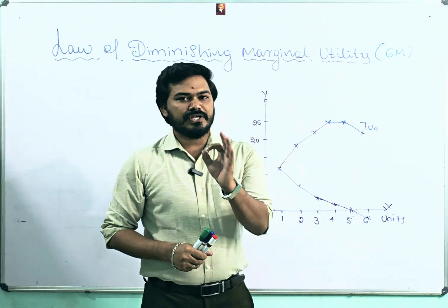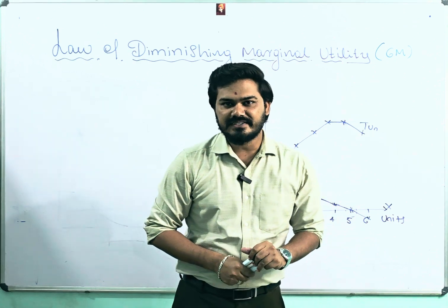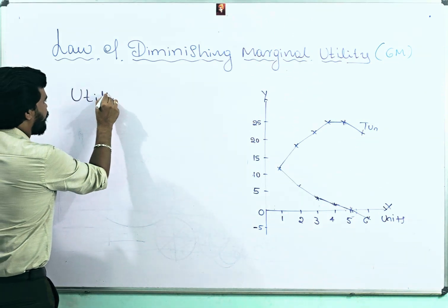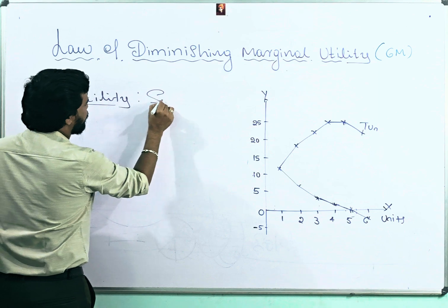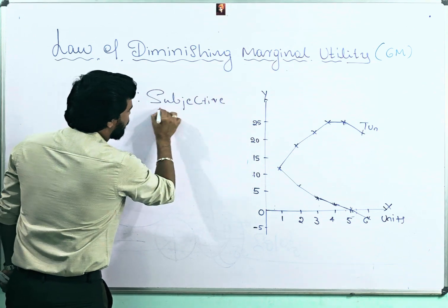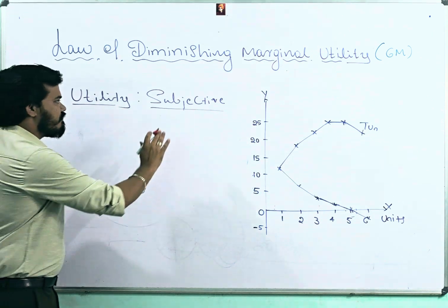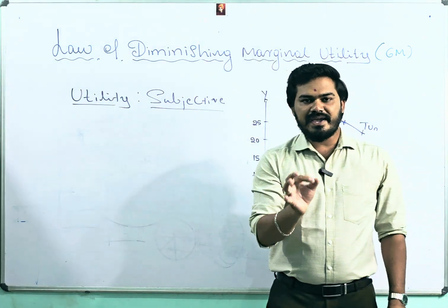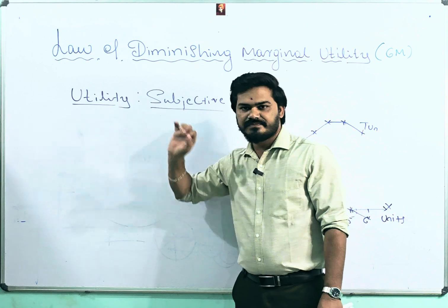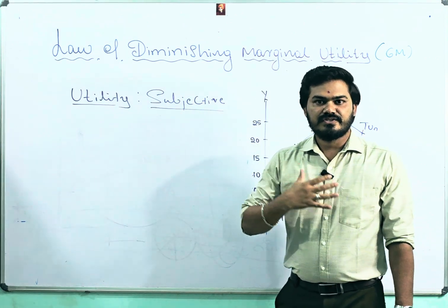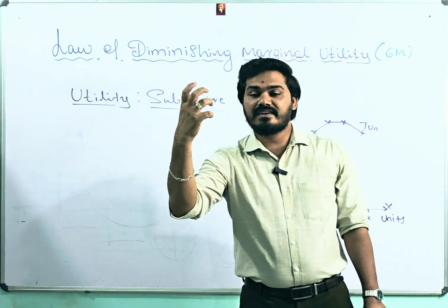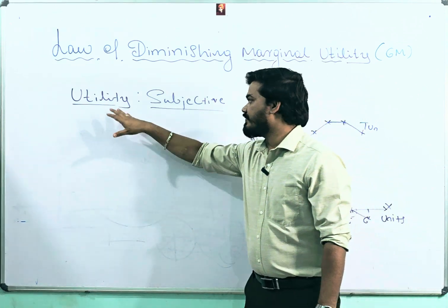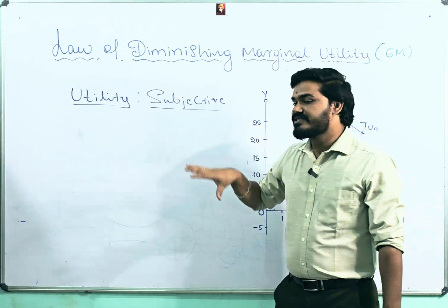Without petrol we can't ride a bike — same here, without the concept of utility we can't deal with the Law of Diminishing Marginal Utility. So what is the meaning of utility, and why is it considered subjective? Utility means the want-satisfying capacity of a good. For example, if I am very thirsty and I drink a glass of water, that glass of water has the capacity to satisfy my want — that is called utility.